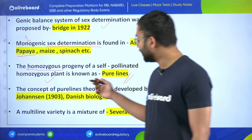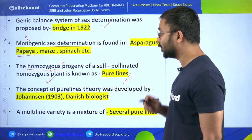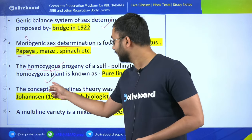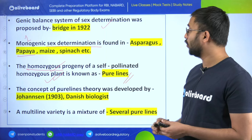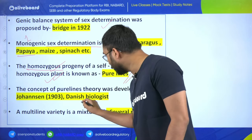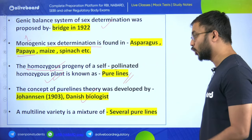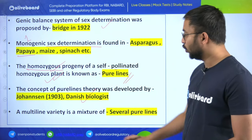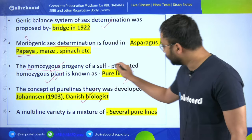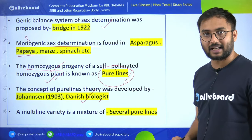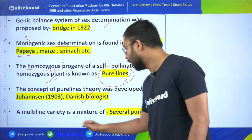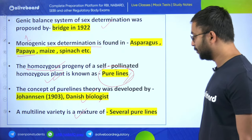Pure lines are the homozygous progeny of a self-pollinated homozygous plant. The concept of pure lines theory was developed by Johansson, who was a Danish biologist. This is a very important micro-topic within genetics. Multi-line variety is a mixture of several pure lines.